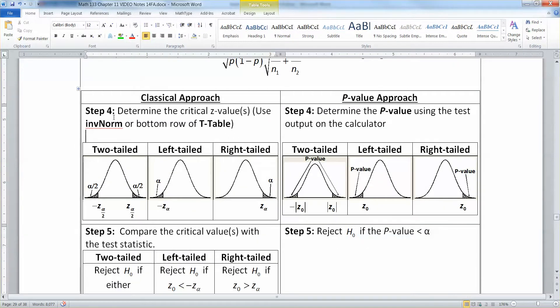Just remember this is a normal distribution now, not a t distribution, not a chi-square distribution, it's a normal distribution, which you can get your values from using inverse norm or the bottom row of your t-table.